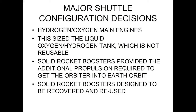Here are some of the major decisions. We were going to go with a hydrogen-oxygen main engine of this size. That's one of the system problems you have to decide. Once you decide what kind of propellant and engine you're going to use, that basically sizes the external tankage — the liquid-oxygen and hydrogen tanks, which are not reusable. Once you decide what kind of engine, you use the equations of motion to figure out how much propellant you need, get the density, and now you know what size tank to use. Solid rocket boosters provide the additional propulsion required to get the orbiter into orbit, and they were designed to be recoverable and reused.